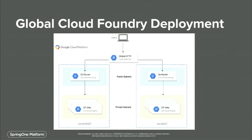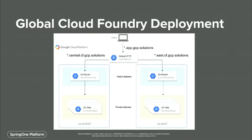Those also have their own wildcard domains in case you wanted to deploy something only to Central or only to East. But if you wanted to make something global, you could deploy it at the app.gcp.solutions tier. The HTTP load balancer recognizes where a request is coming from and routes it to the closest region. If you had N regions, you'd always get responses from the closest region — and you don't have to do any crazy DNS tricks to get the request to the right place.